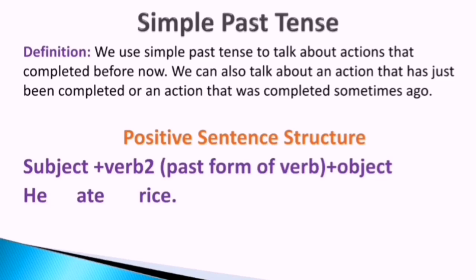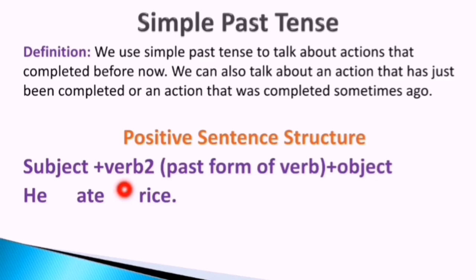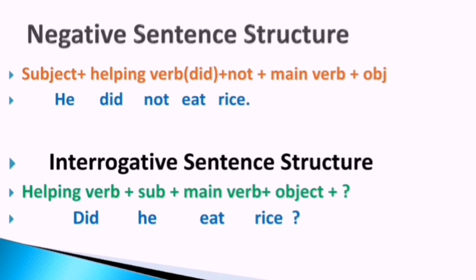Let's look at the positive sentence structure for simple past tense: subject + V2 + object. V2 means the second form of a verb — the past form. V1 is the present form, V2 is the past form. For example: 'He ate rice.' I have given simple examples to simplify the lesson for you.